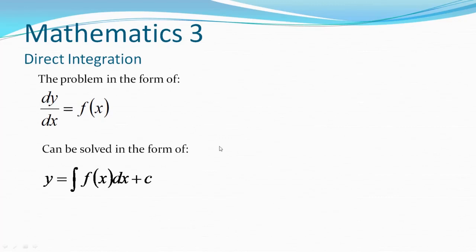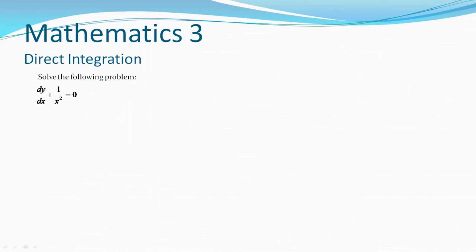Let's look at an example. The problem comes in the form of dy over dx plus one over x squared equals to zero. This is not the standard form that direct integration is presented as, so the first step is to change this into the standard form — with dy over dx on the left and minus one over x squared on the right.